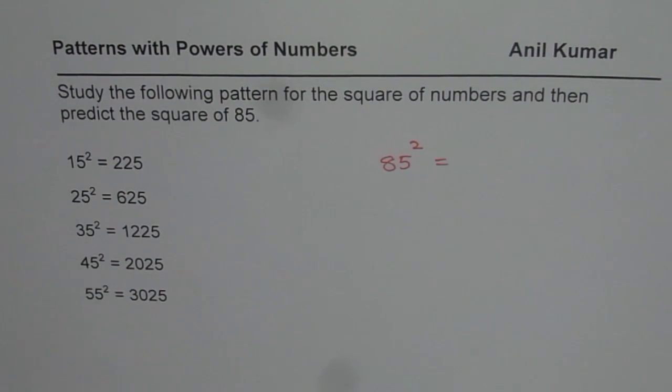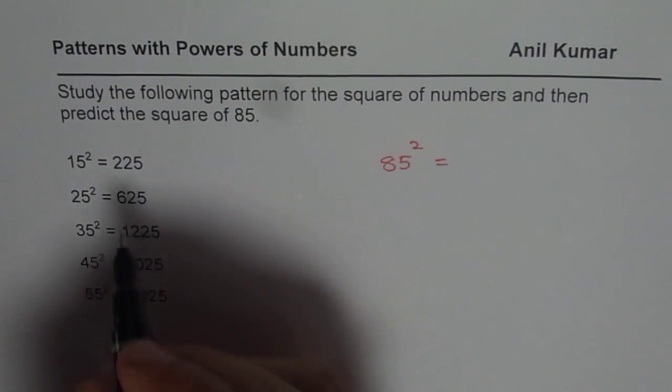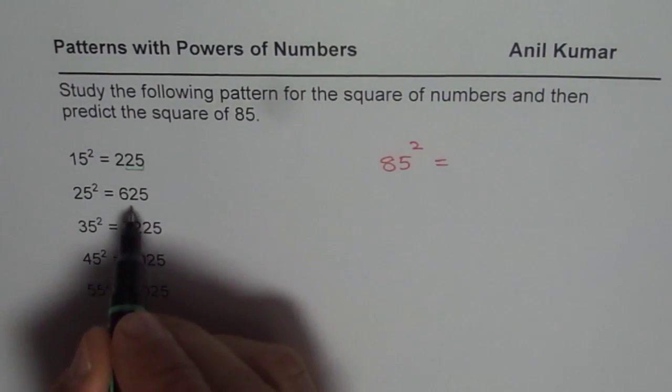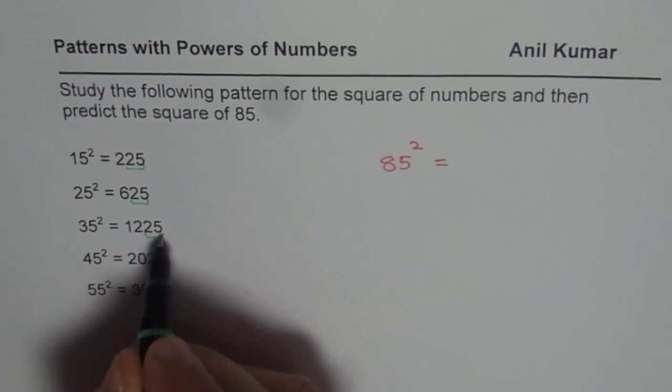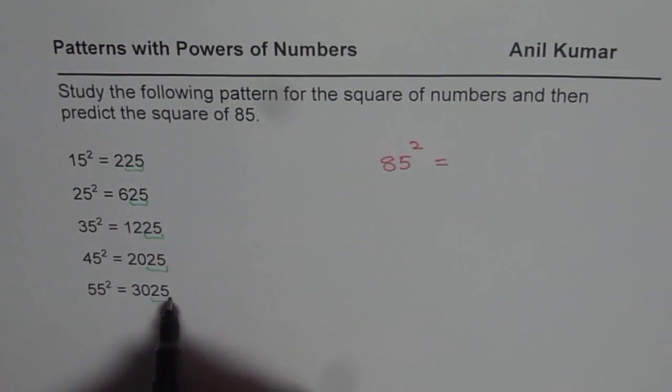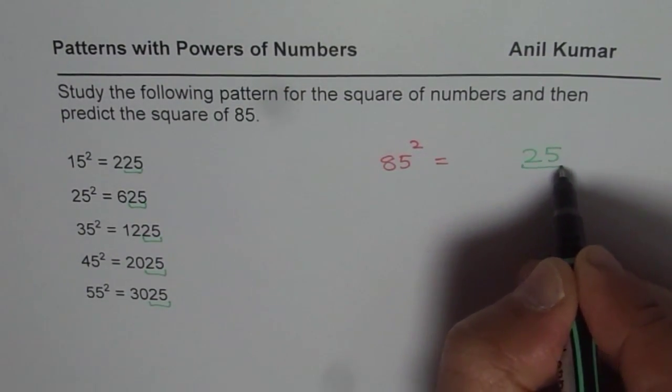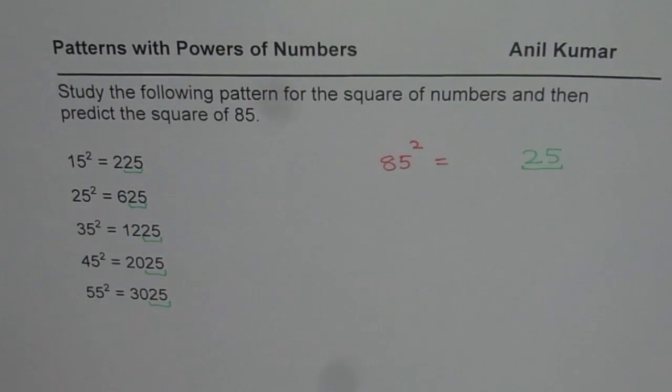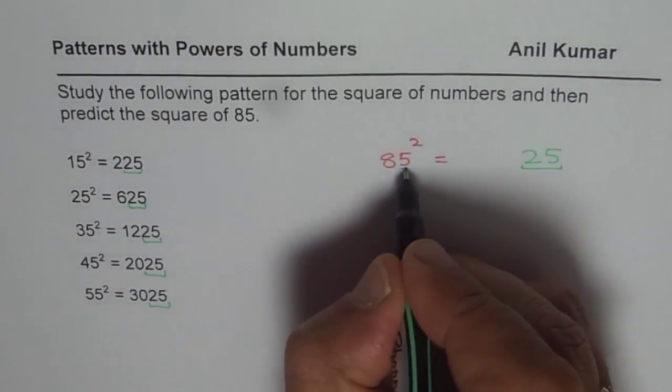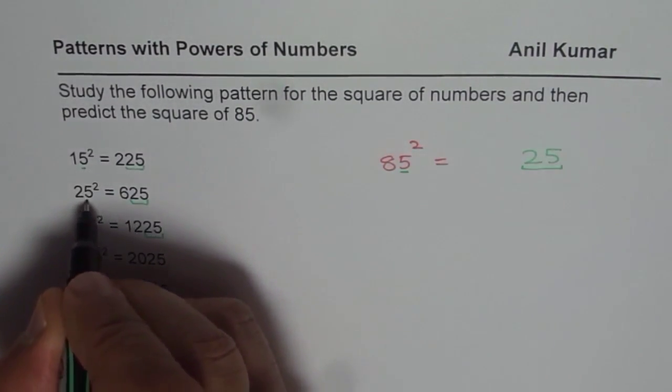suggestion. So let's look for a pattern here. What we notice is that the last two digits are always 25. So the last two digits are 25, so we could clearly write 25 at the end. These are my last two digits whenever the number is ending with 5.